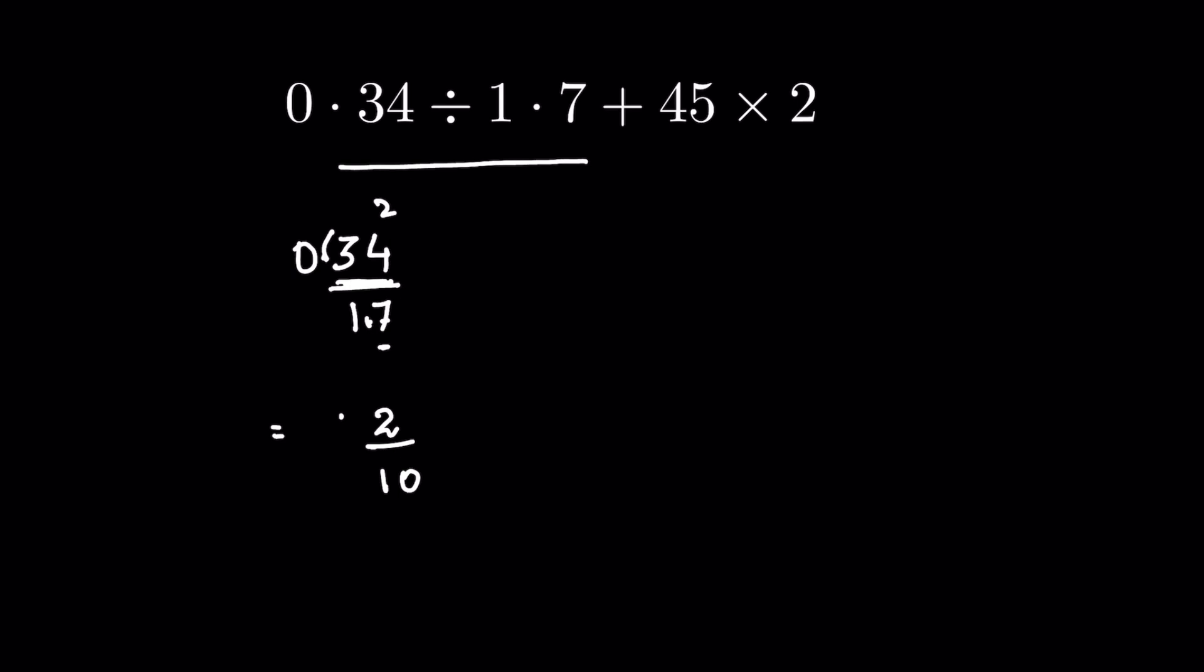Now 0.2 plus 45 multiplied by 2. In BODMAS, after division we have to do multiplication.